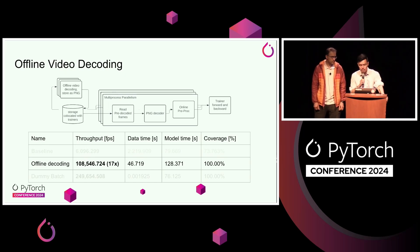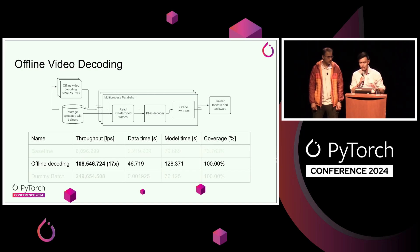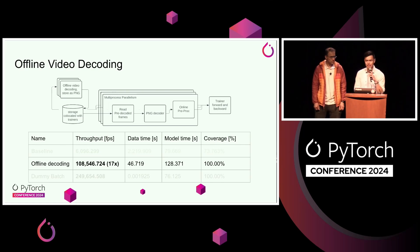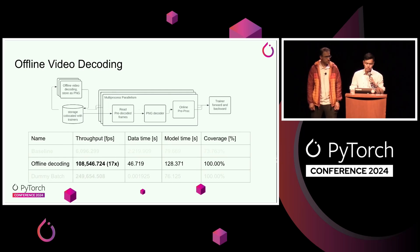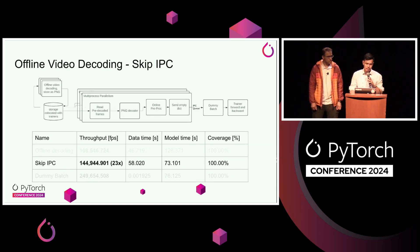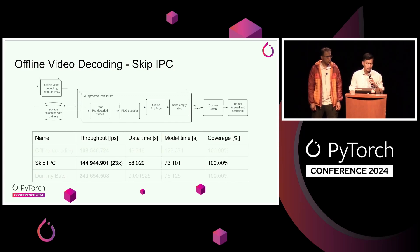With offline decoding, we see a 17x speedup over our baseline. This is the first time we see less time loading data than in the model, which is promising — though the GPUs are still a little hungry. Something interesting is that the model time actually went up, which is unintuitive. We haven't changed anything about the simple linear model — we're still copying host to device. One thing we suspected was that with multi-processing, sending data from worker processes to the trainer over an IPC queue involves some invisible CPU work in the backend to make that transfer more efficient.